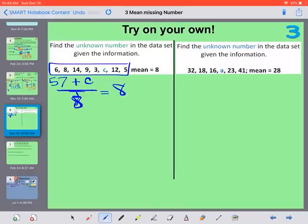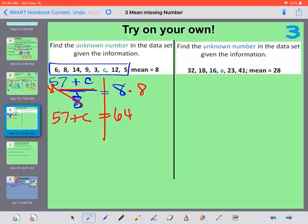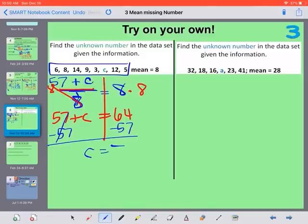Is 57. So 57 plus C divided by 8 equals 8. So the opposite of dividing by 8 is multiplying by 8. 8 times 8 is 64. And then to subtract 57. C should have given you 7. Our missing number on that one was 7.